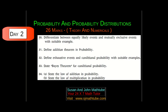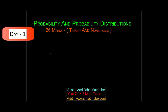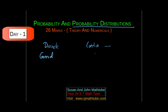These are the possible theory questions — you can pause the video and check them out. Coming to probability distributions, it is divided into two: first is discrete, and the second is continuous. In discrete, you have to study the general properties, and in continuous, the same general properties.